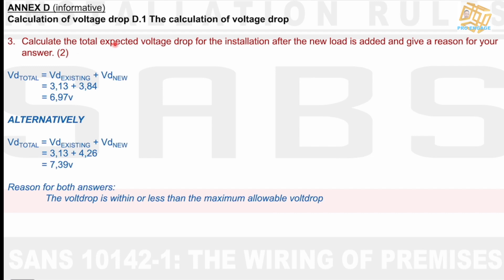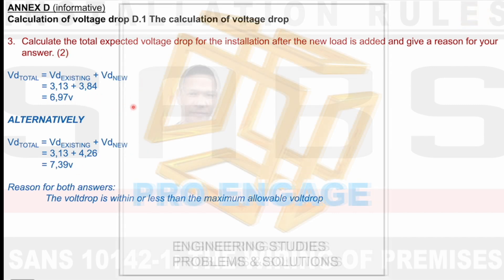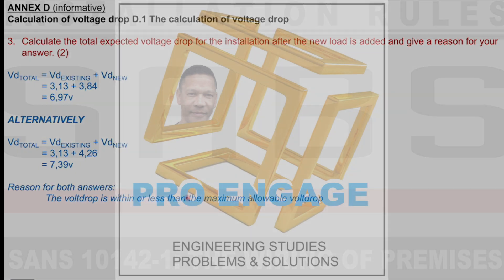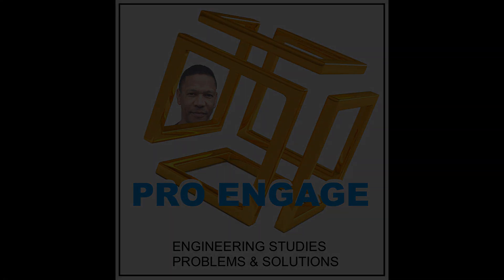And if you look at the question, calculate the total expected voltage drop for the installation after the new load is added. That is one answer, that one or that one, and then another answer or another point, point number two that you would score is give a reason for your answer. So do you score one mark or two marks, depending on which of these is expected from you. But this answer will be the same for both. So that is good news, depending on how you take it and who is calculating.